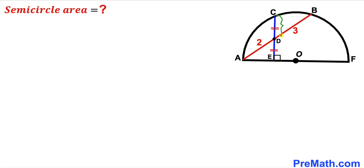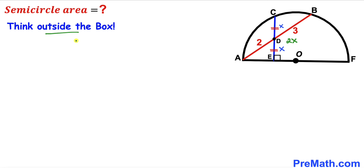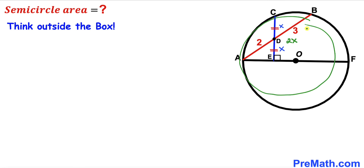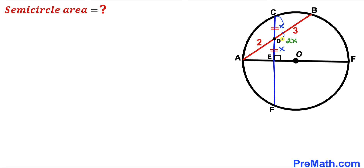We know that segment CD equals DE. Let me label segment CD as X units — then DE is also X units. So the whole perpendicular CE is going to be X plus X, which makes 2X. Now, thinking outside the box and considering the whole circle, I have extended perpendicular CE all the way to point F such that segment EF equals CE by symmetry. So if CE is 2X, then EF is 2X as well.